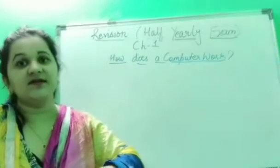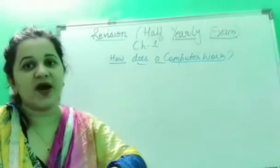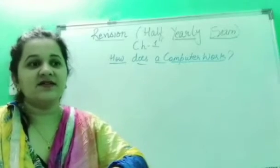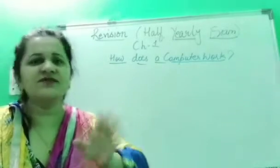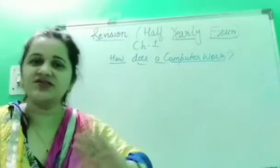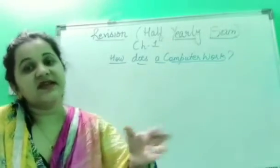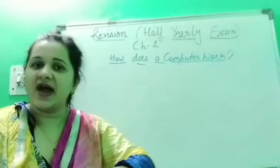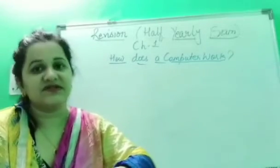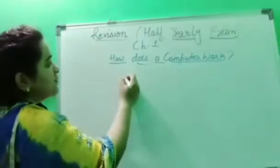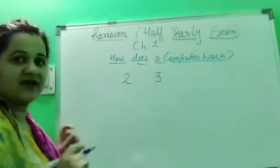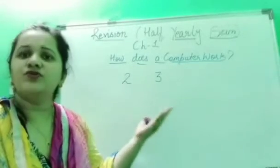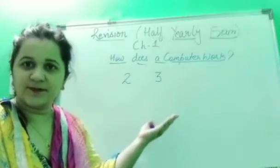Now let us understand how a computer works. A computer requires input — it requires some data, which are the raw facts and figures. Raw facts and figures means pictures, images, letters, or words which do not convey any meaning on their own. For example, if I give you the data 'two and three,' this is data in the form of numbers — it does not yet convey what to do with it.